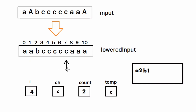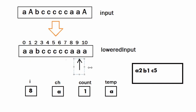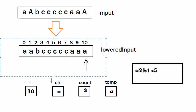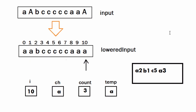Once we reach index 8, temp holds A. Comparing temp with ch, they don't match, so we display C5 and copy temp into ch. At index 9 the character is A, so temp holds A and they match — count becomes 2. At index 10, the character is A again, so count becomes 3. After the complete iteration, we display the final value of ch and count, giving us the compressed output.